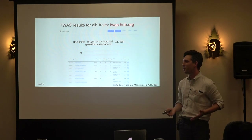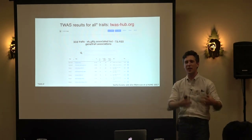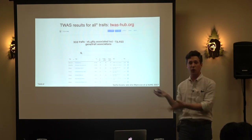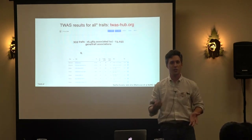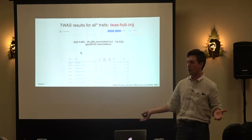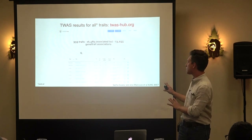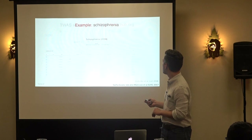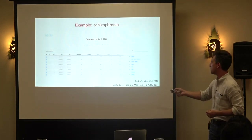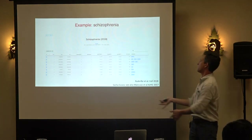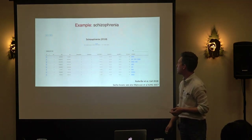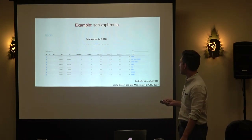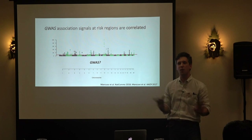It's even easier now — not only can you download weights and apply to summary stats, it's already been done. If you have a trait of interest, you can go to twas-hub.org and look it up to see what genes pop up, or if you have a gene of interest, see what traits pop up on the phenome side. Here's schizophrenia — each row corresponds to some gene that's been tested for association. That's TWAS in a nutshell.